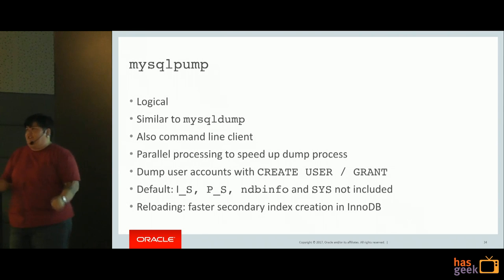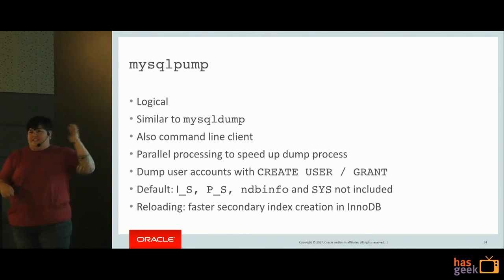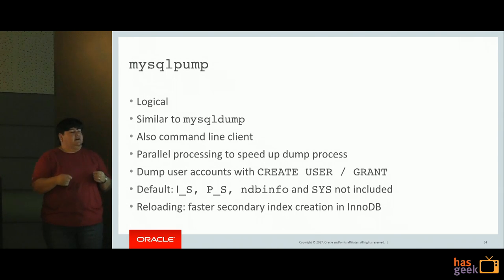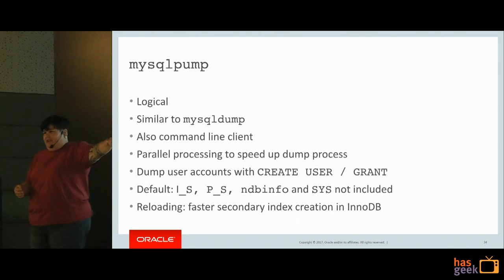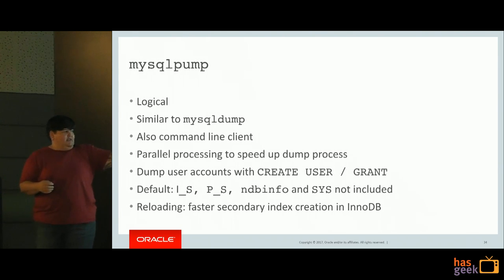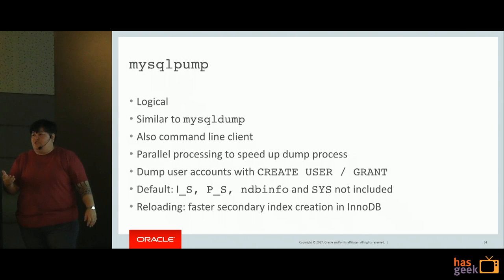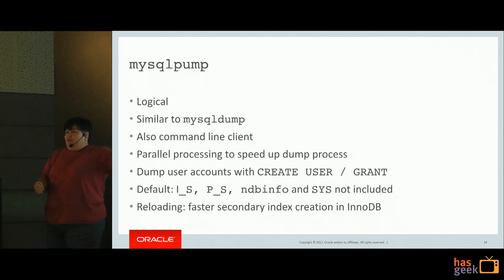For larger systems, consider mysqlpump - only available in 5.7 and requires a 5.7 server. Similar to mysqldump, but allows parallel processing of the backup rather than single-threaded. It dumps user accounts as CREATE USER and GRANT statements instead of dumping the mysql user tables, which is nice. By default, information_schema, performance_schema, NDB info (if using cluster MySQL), and sys schema are not included in your dump since they're assumed to be transitional or ephemeral. It also has faster loading of secondary indexes.